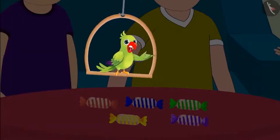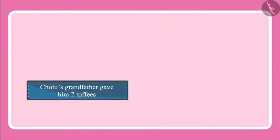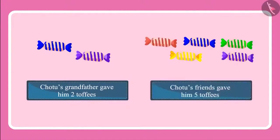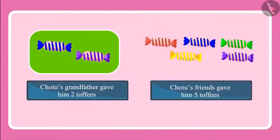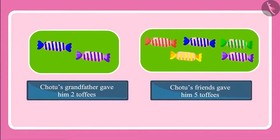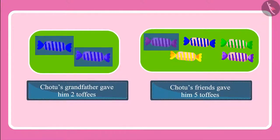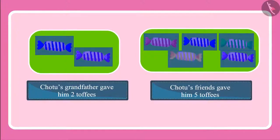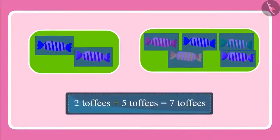Let's see: Chotu's grandfather gave him two toffees and his friends gave him five toffees — two toffees and then five more. Let's count: one, two, three, four, five, six, seven. This means Chotu now has seven toffees with him.